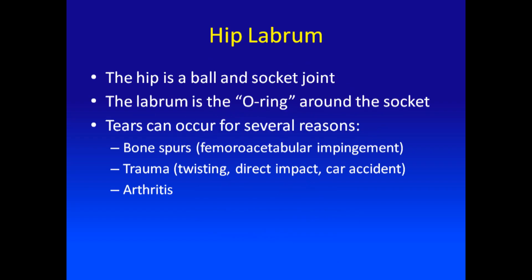The hip is a ball and socket joint, and around the socket there is an O-ring called the labrum. Tears can occur in this labrum for several reasons, the most common of which is bone spurs, which is a process called femoroacetabular impingement. In addition, direct trauma or arthritis can also cause tears.